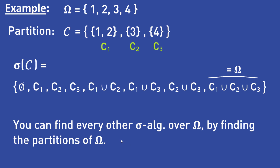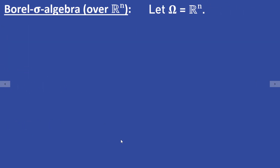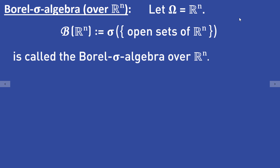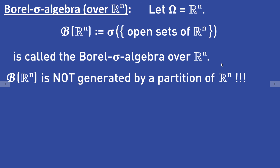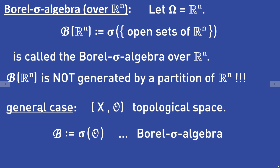Now that we know how sigma algebras over at most countable sets look, let's look at an example over an uncountable set. Let omega be Rⁿ. The sigma algebra generated by all the open sets of Rⁿ is called the Borel sigma algebra over Rⁿ, usually denoted B(Rⁿ). This sigma algebra is not generated by a partition of Rⁿ. More generally, if you have a topological space, the Borel sigma algebra is the sigma algebra generated by the topology.